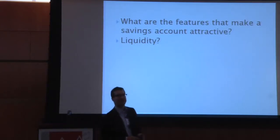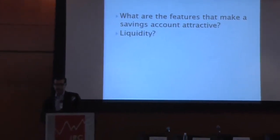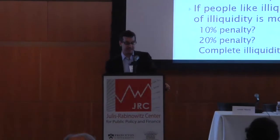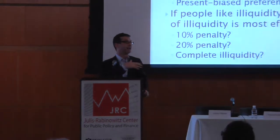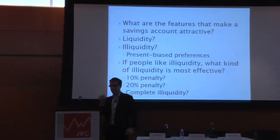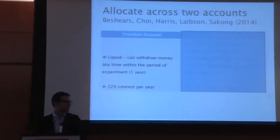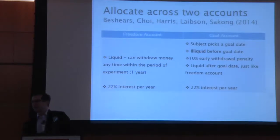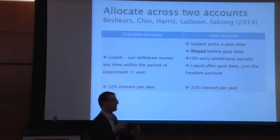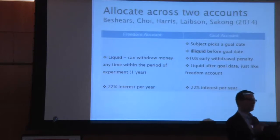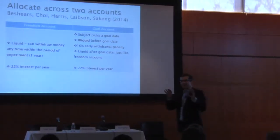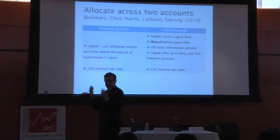Let's turn to the paper I want to talk about now: what are the features of illiquidity that make savings contracts desirable? In a beta-delta world, having illiquid assets might actually be better. We live in a 401k/IRA world with a 10% penalty for early withdrawal — what's the ideal system? Imagine I gave you $500 real dollars and asked you to allocate across two accounts: a liquid account with a 22% rate of interest, and a goal account with also a 22% rate of interest. The goal account has one special feature: there's a goal date you pick, and before that date there's a 10% penalty for early withdrawal. After the goal date, you can have your money gratis. From a classical perspective, the goal account is completely dominated — it's simply an illiquid version of the freedom account.